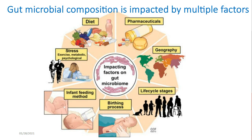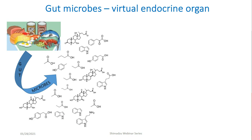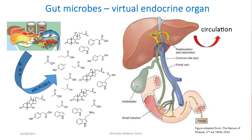Gut microbes have the capacity to produce and regulate production of multiple small molecules. Those molecules directly impact intestinal cells, but also via the portal vein they enter the liver, where some of them are further metabolized by liver enzymes. From the liver, gut microbial metabolites enter circulation and from there impact the function of distal organs. In other words, gut microbes resemble an endocrine organ. But unlike other endocrine organs that produce one or at most several hormones, gut microbes have capacity to produce hundreds of small molecules from entire spectrums of chemical classes.